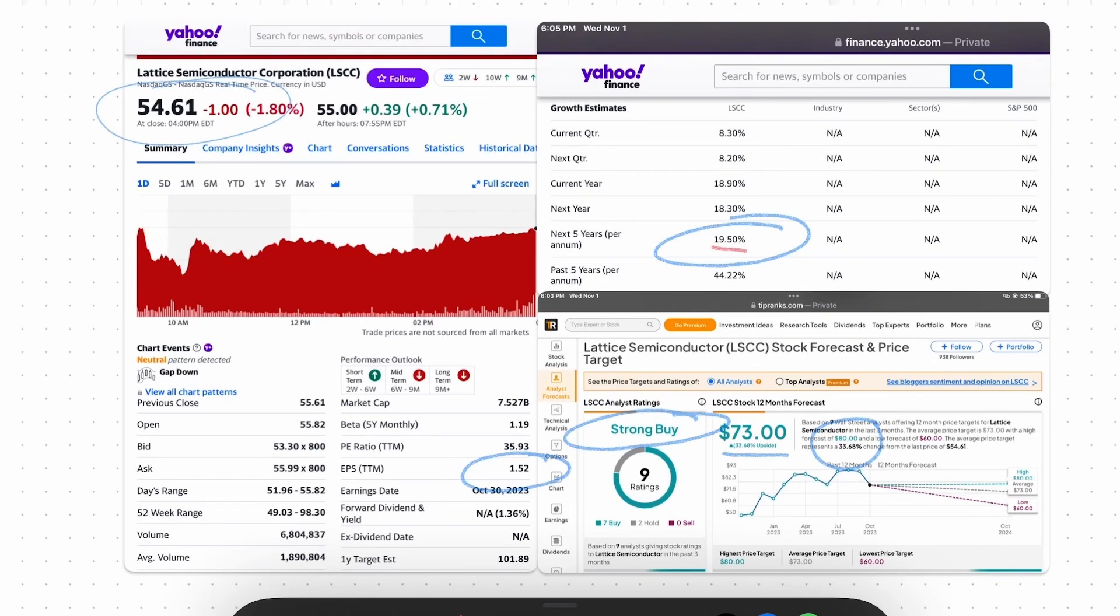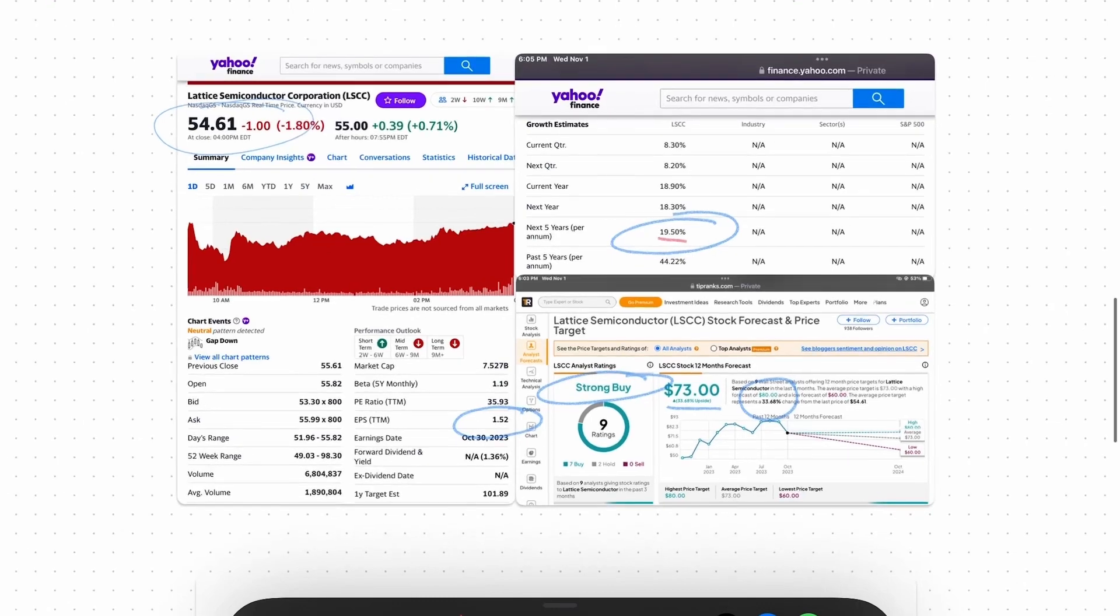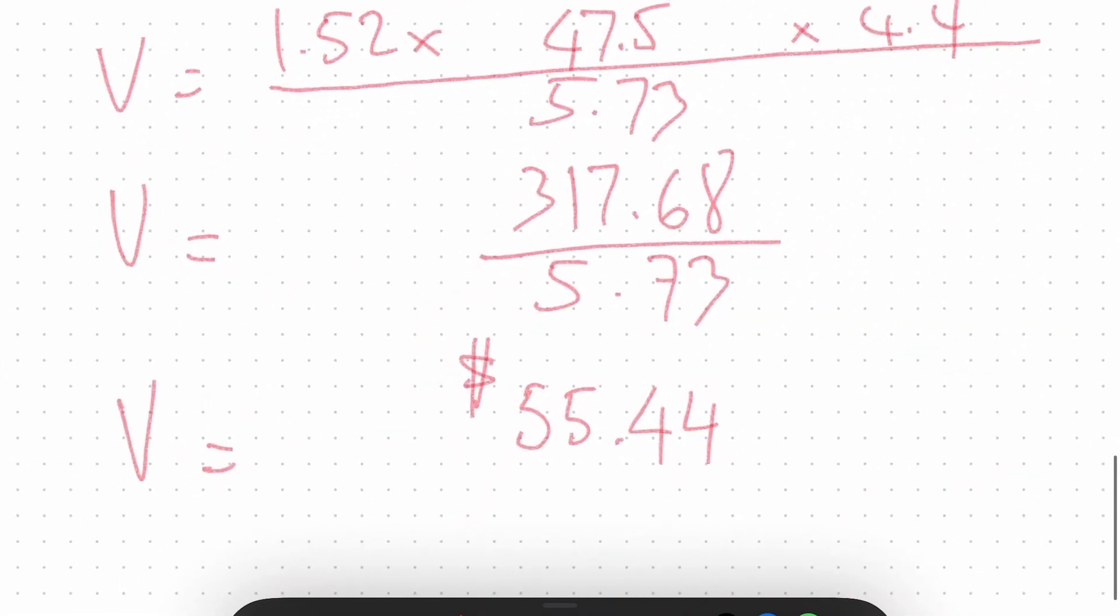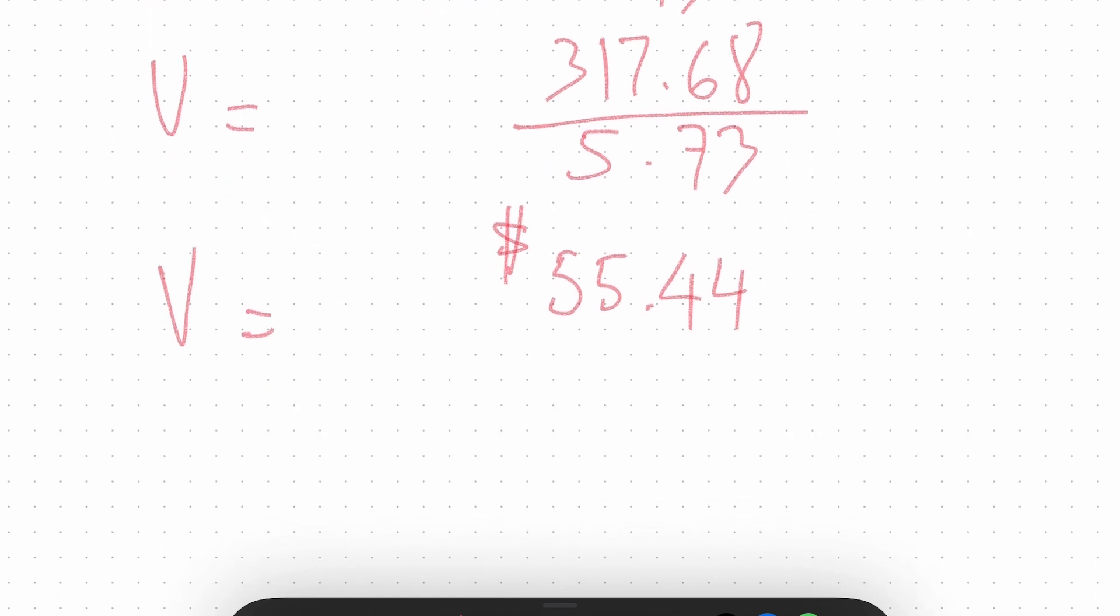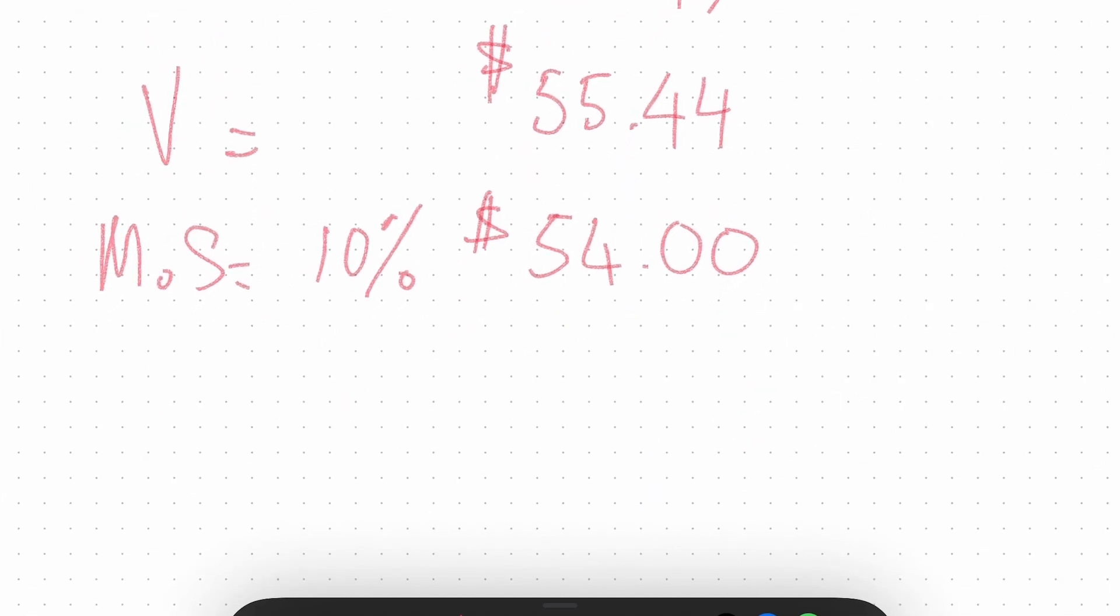The intrinsic value is $55.44, and now Lattice is $54.61, so it's at the same level at the intrinsic value. But let's see, how about even if I take out 10% margin of safety like Warren Buffett does. We take out 10%, that's $5.54, so $55.44 minus $5.44 equals $50. At 10% margin of safety would be $50.